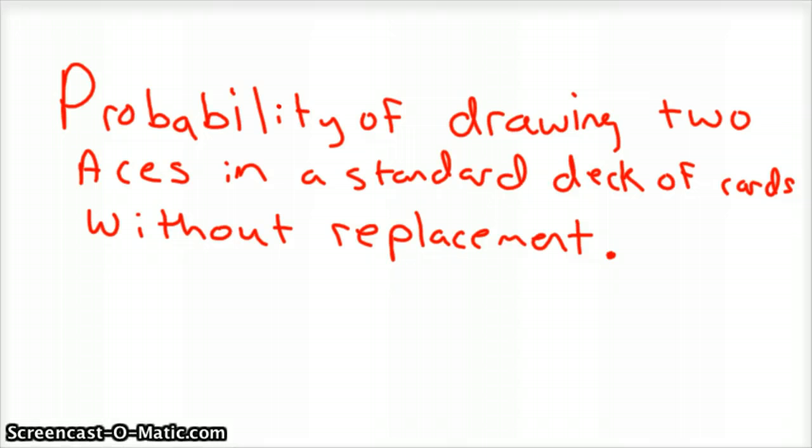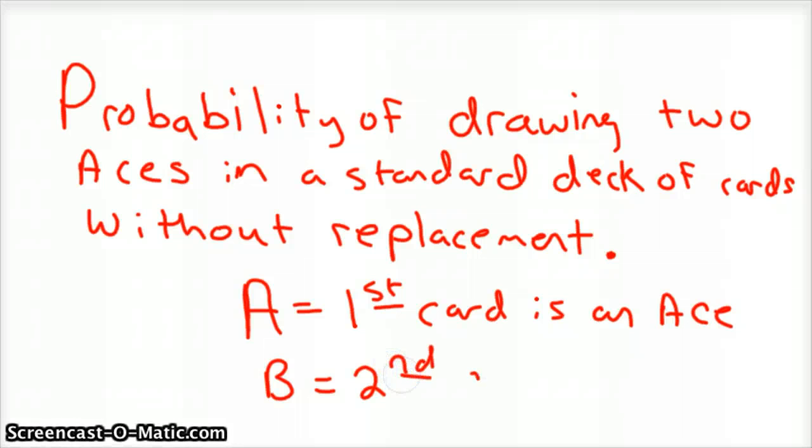So, the probability, let's let set A be first card is an ace. And then set B would be second card is an ace.